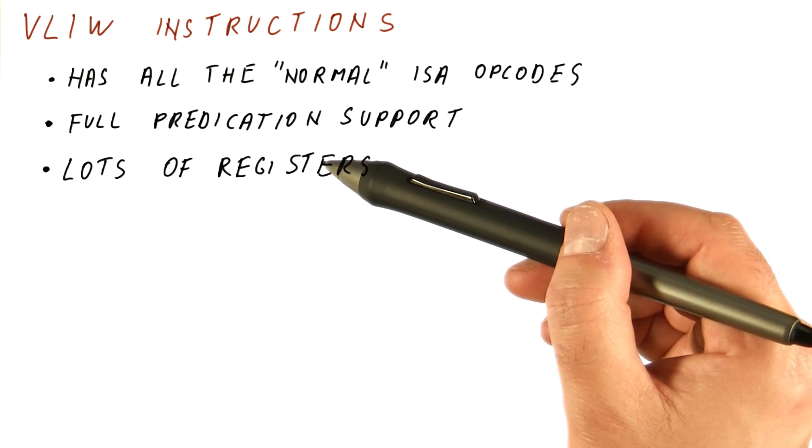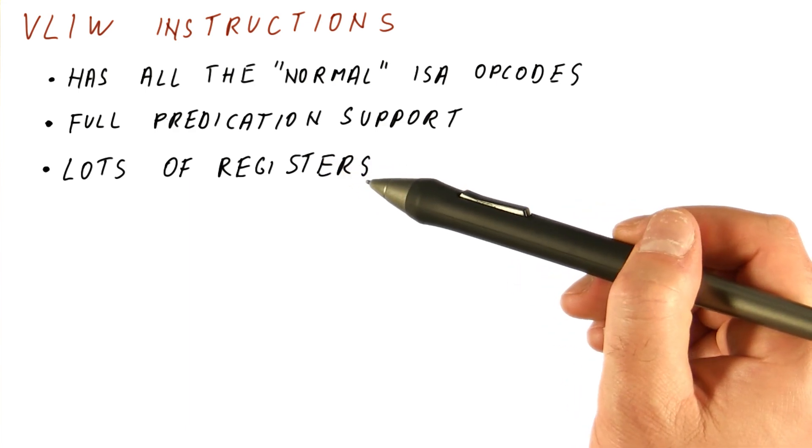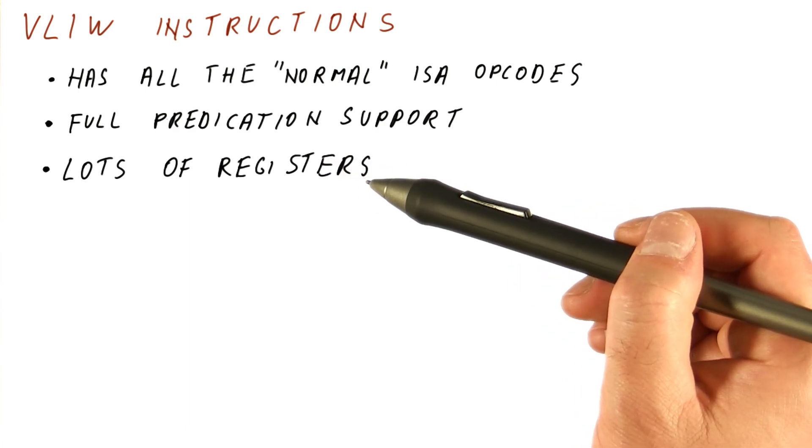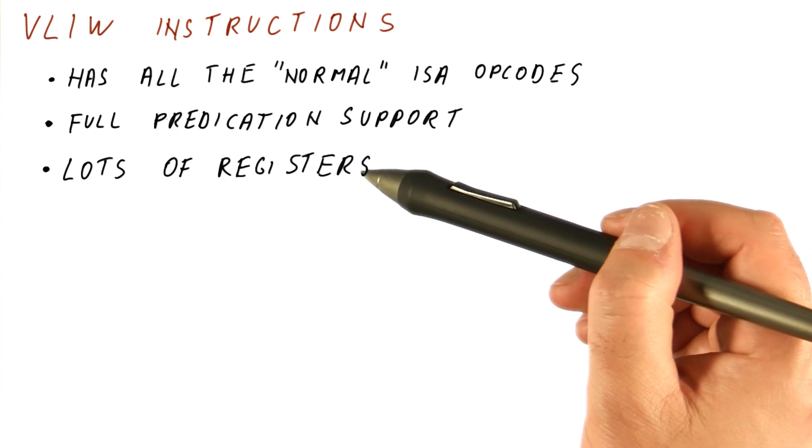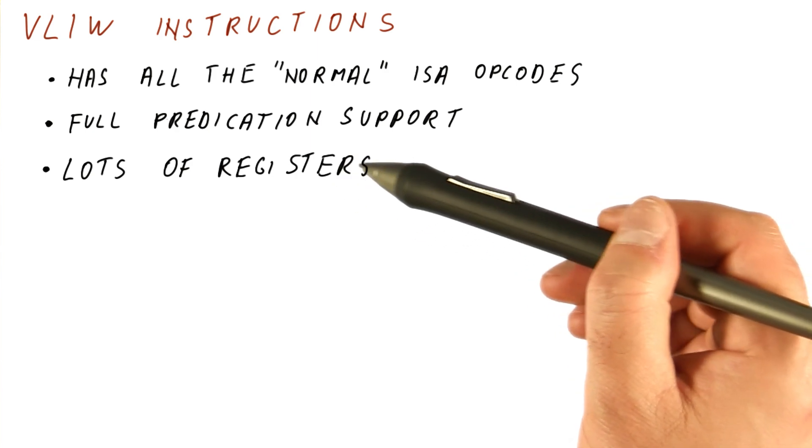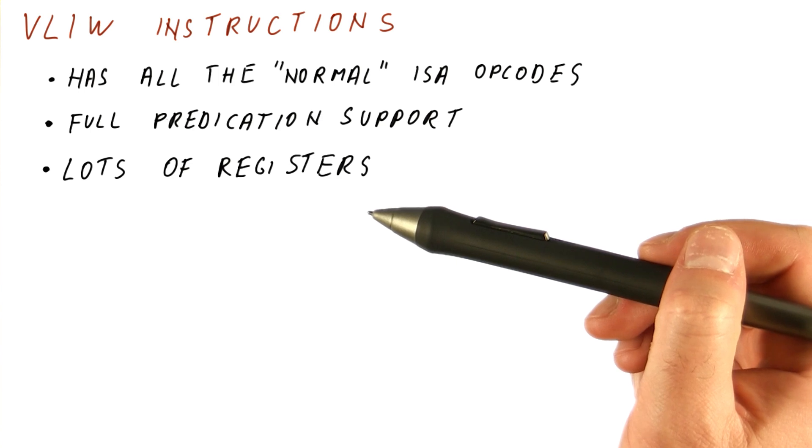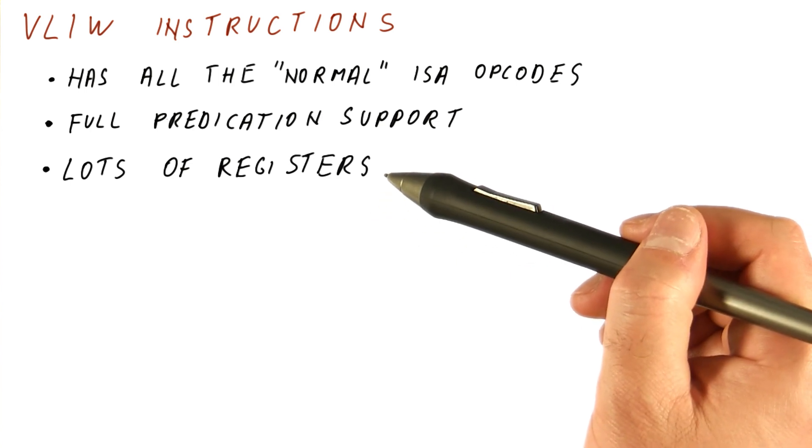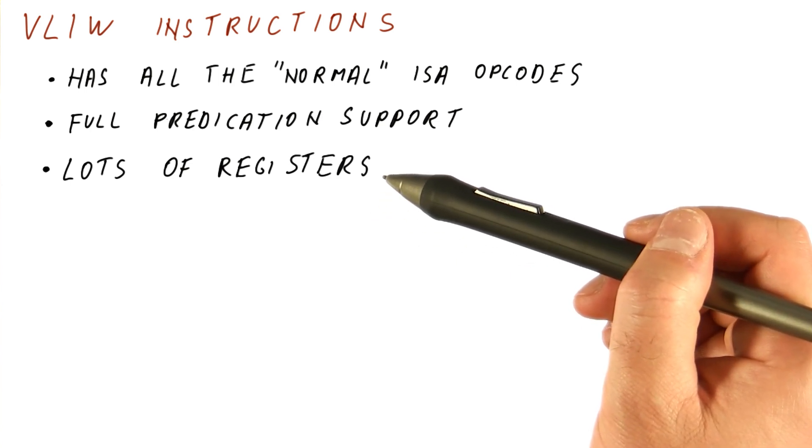We have already seen some examples of this in the compiler support for ILP lesson, where sometimes we have to put some things in other registers when we are rearranging instructions. So to help the compiler do instruction scheduling, we need more registers than usual, and we really want the compiler to do a good job here, so we will provide a lot of registers to it.